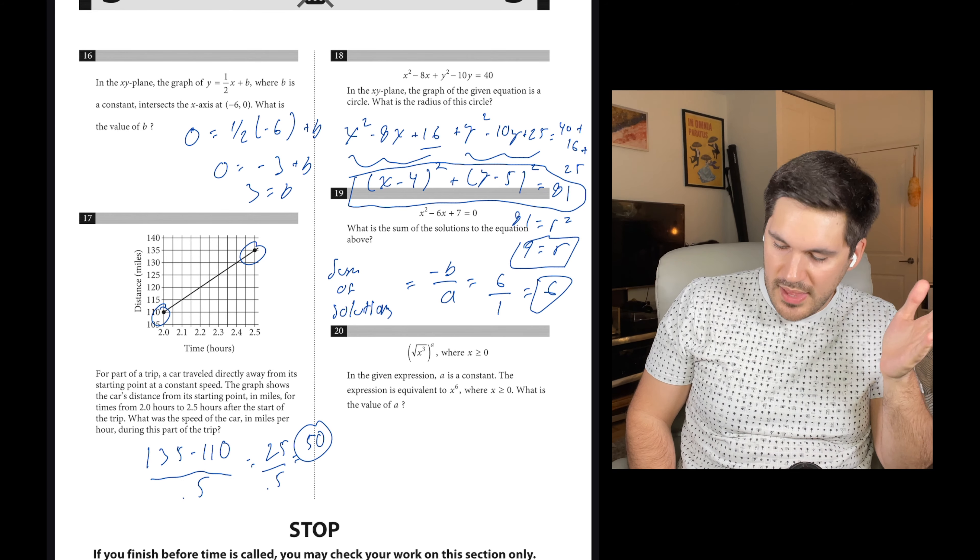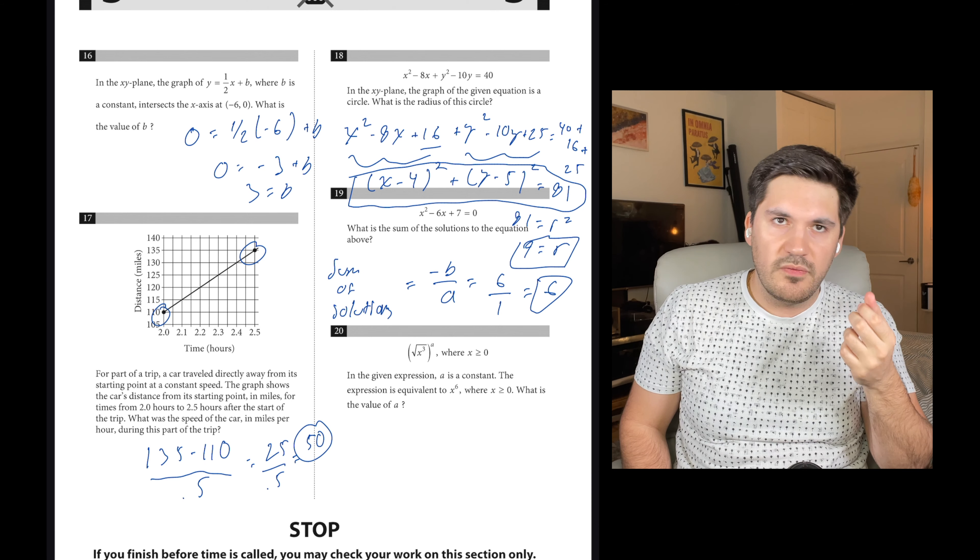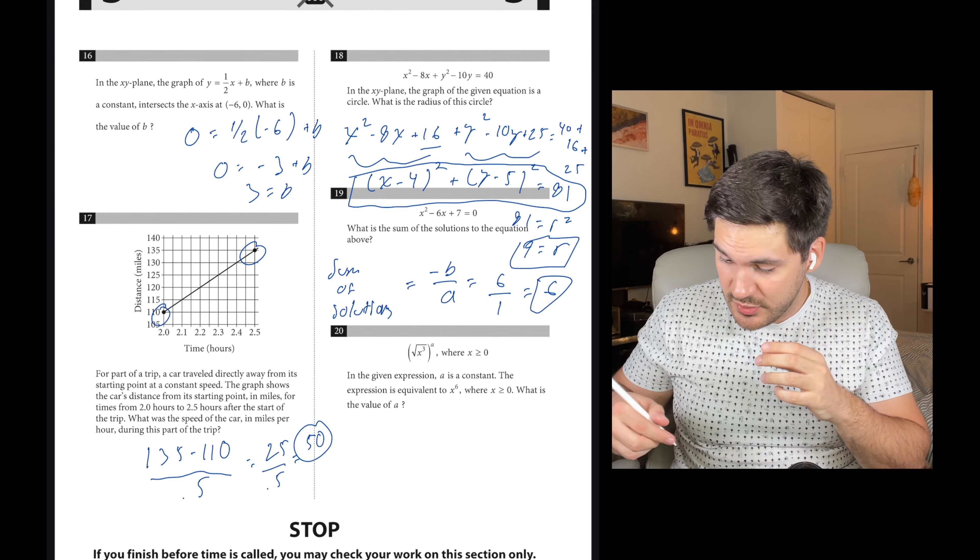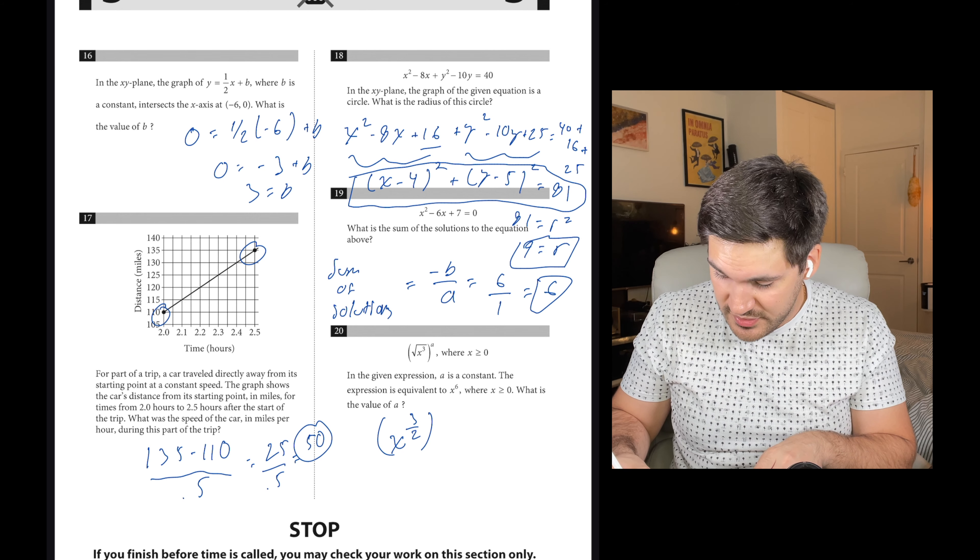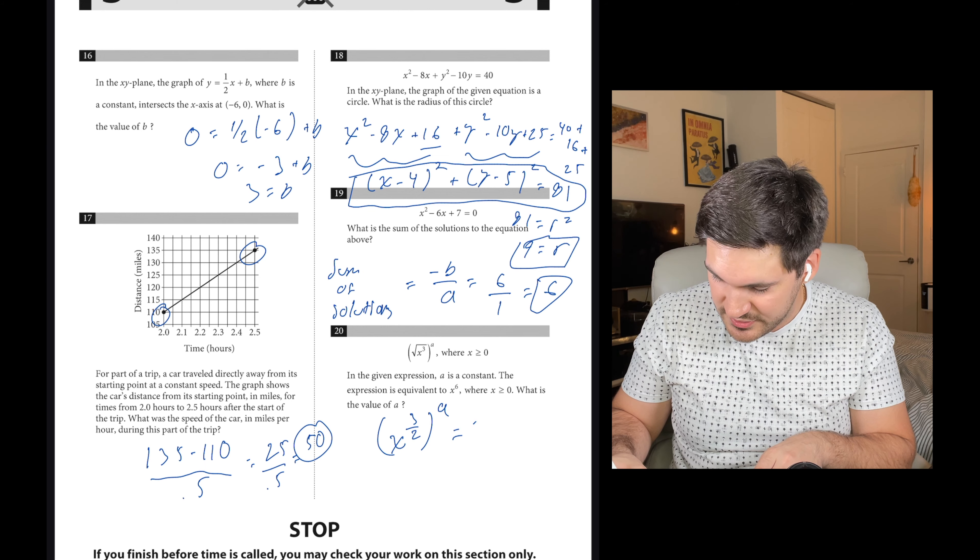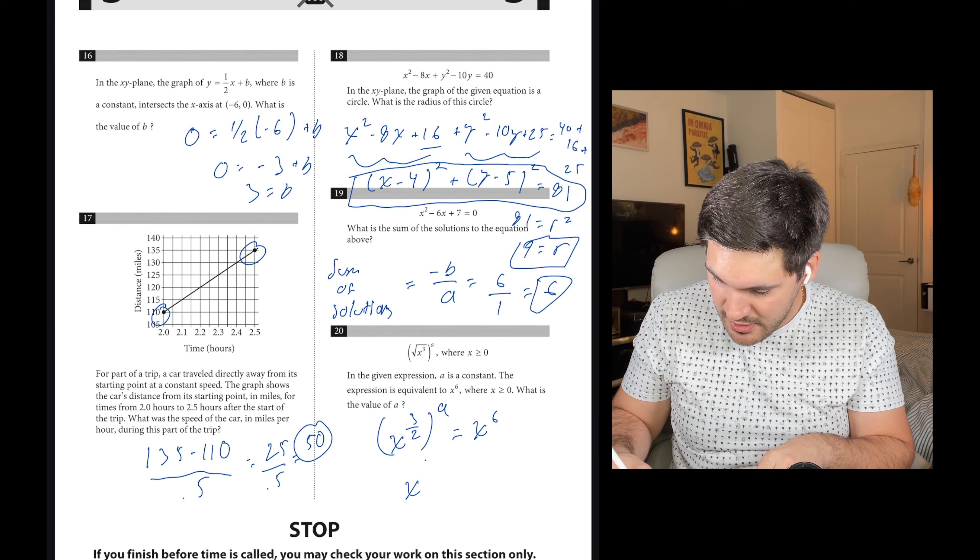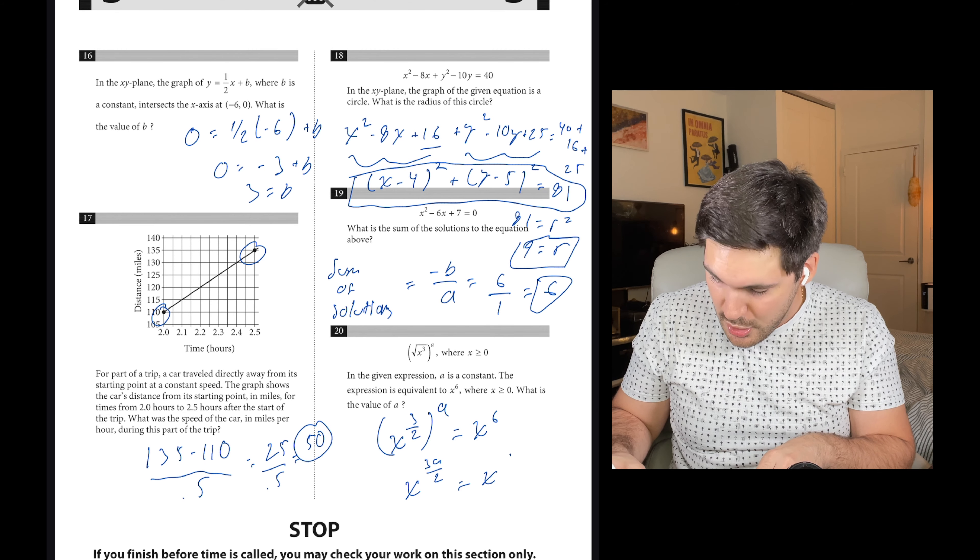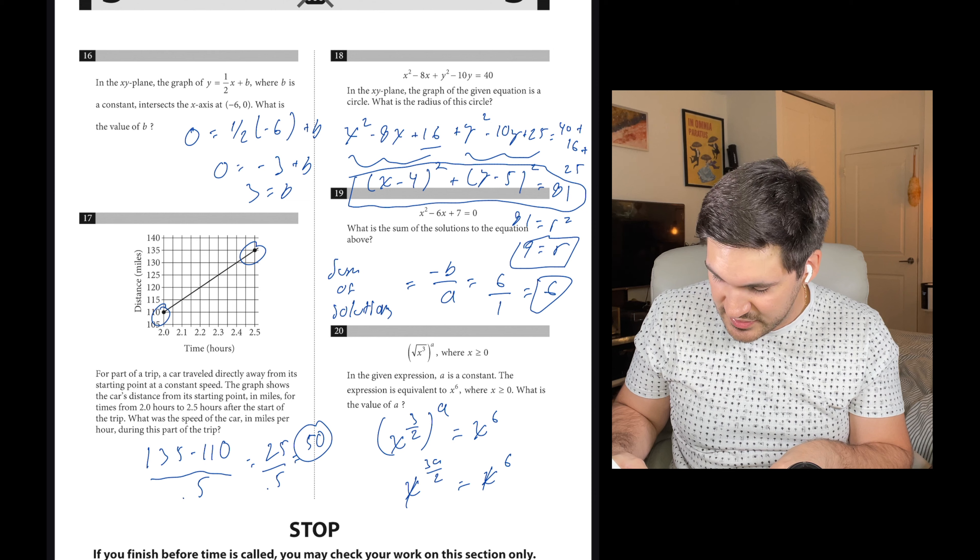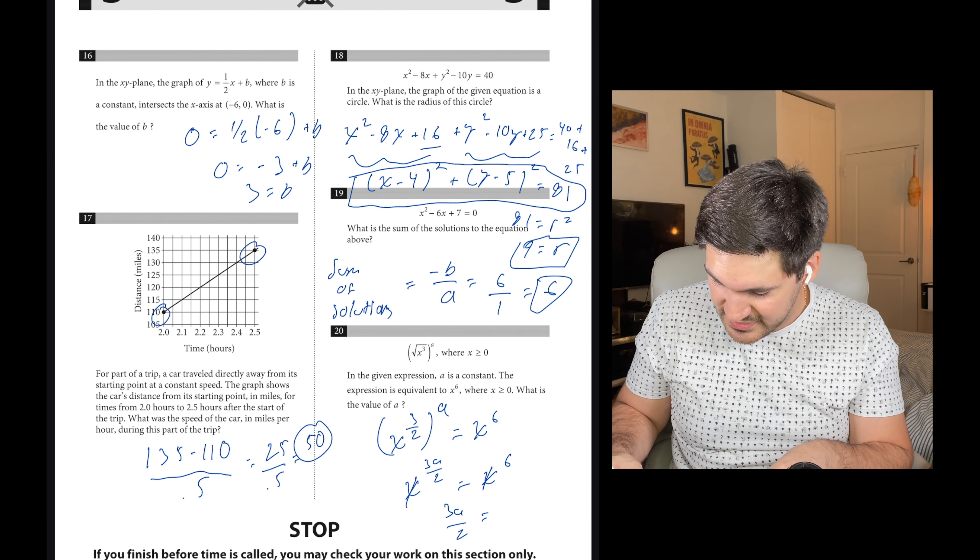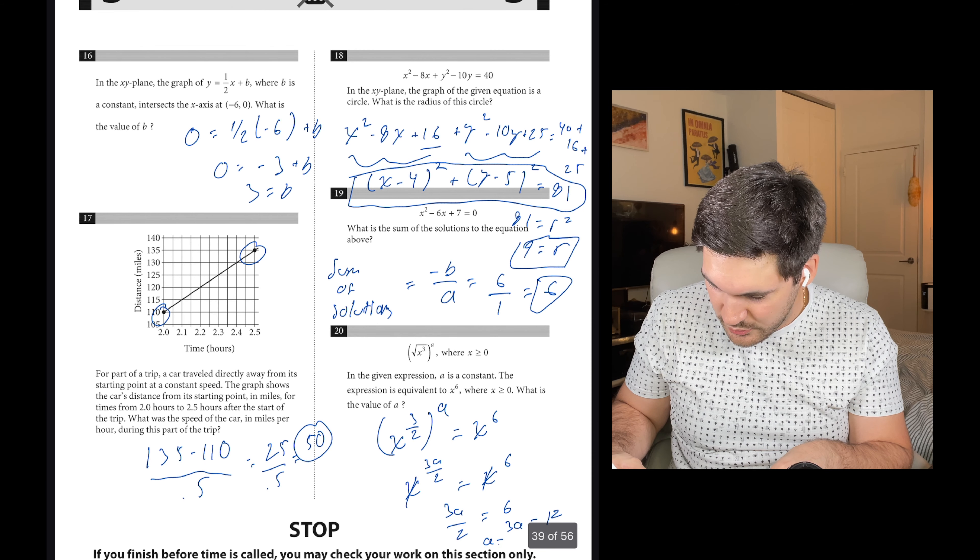And now we are up to the last one. Given expression a is a constant, the expression is equivalent to x to the 6th power. What is the value of a? We're going to basically rewrite this. Square root of x to the 3rd is the same thing as x to the 3 halves power, but we're also raising this to the a power, and this is equal to x to the 6th. When you raise a power to another power, you multiply the exponents, so this is x to the 3a over 2 equals x to the 6th. When you have the same basis and you're solving for a variable in the exponents, you can drop the bases. So 3a over 2 equals 6. So 3a equals 12. So a equals 4.